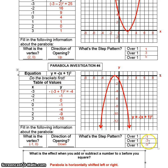That affects your step pattern. Your step pattern, which is originally one, three, five, is going to now be multiplied by your a value. So since the a value is negative one, negative one times your original one gives you negative one. Negative one times your original value of three gives you negative three. And negative one times five gives you a negative five.